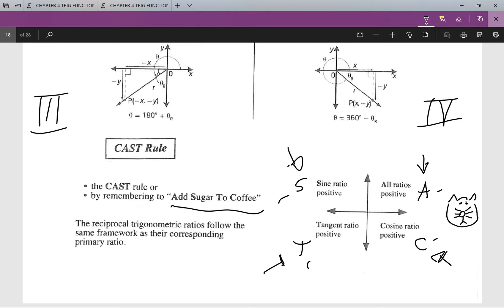So what this means, all the ratios are positive: sine, cos, tan, secant, cosecant, and cotan are all going to be positive in this quadrant.